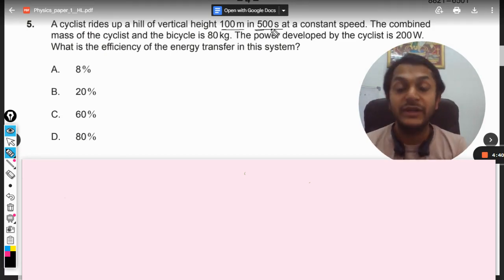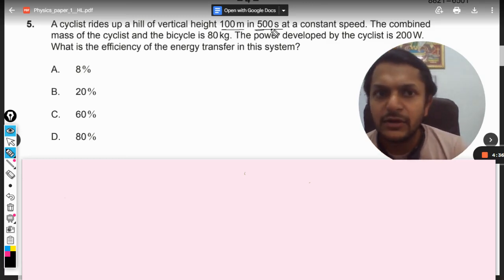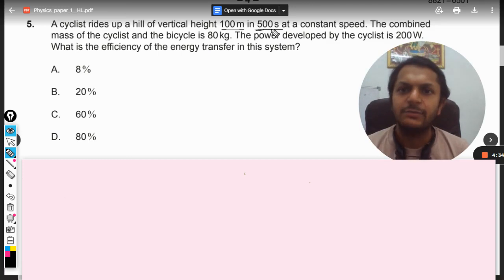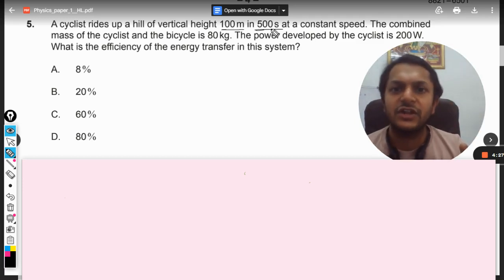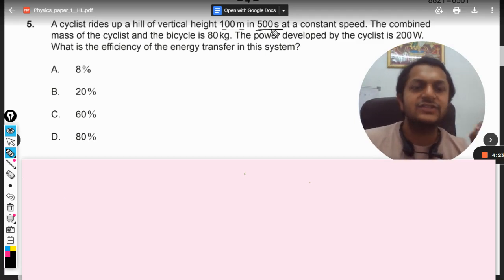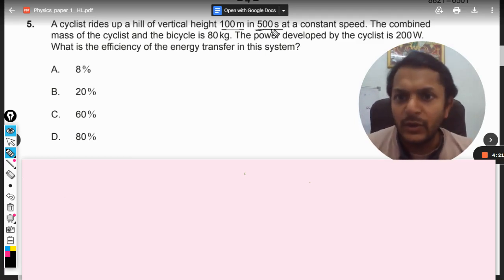Constant speed is very important, I will tell you why. The combined mass of the cyclist and the bicycle is 80 kg. The power developed by the cyclist is 200 watts. What is the efficiency of the energy transfer in this system?